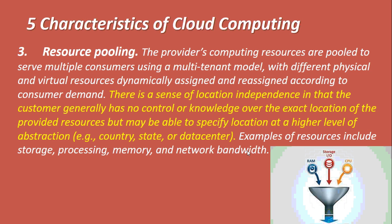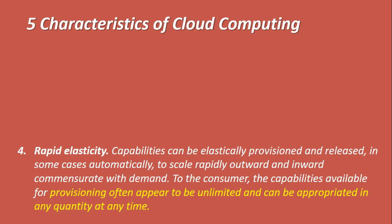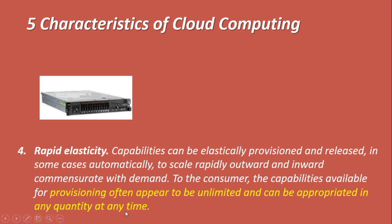The fourth characteristic is rapid elasticity. Just as elasticity means you can pull up or pull down, capabilities can be elastically provisioned and released — in some cases automatically — to scale rapidly upward and inward with demand. The capability available for provisioning often appears to be unlimited and can be appropriated in any quantity needed by the consumer.